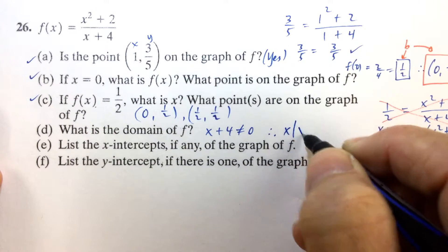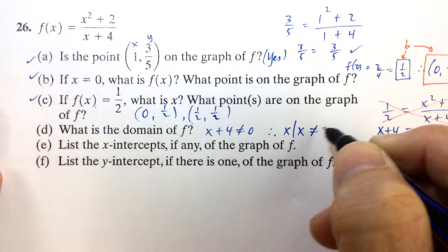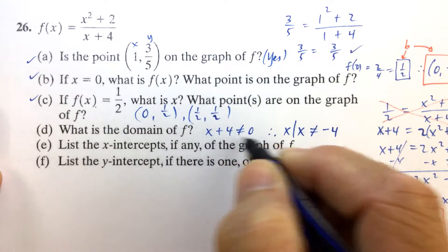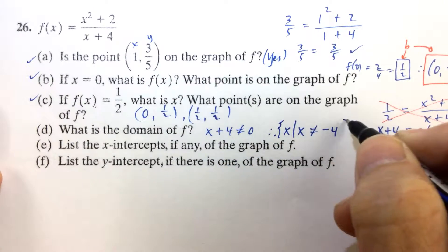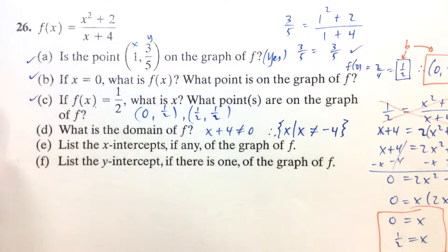So therefore, the domain is all real numbers X, such that X cannot be equal to negative 4. Subtract 4 from both sides here, and we see that X is not allowed to be negative 4, because that would make the denominator equal to 0.